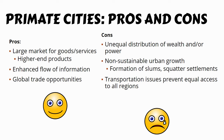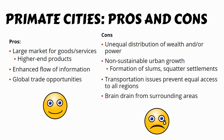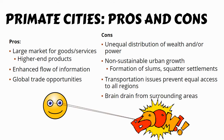Another con is that transportation issues prevent equal access to all regions — picture Paris, where all roads and train systems lead to Paris. Even in an MDC, some areas are less well-served. Finally, you're going to have brain drain from surrounding areas. This can happen on multiple scales — whether it's people leaving an LDC for an MDC, or talented people from rural areas moving into urban areas, which is problematic when you concentrate all the talent in one place.